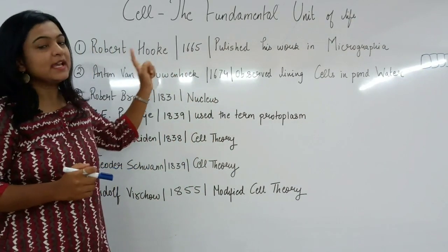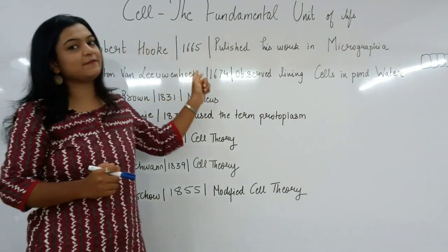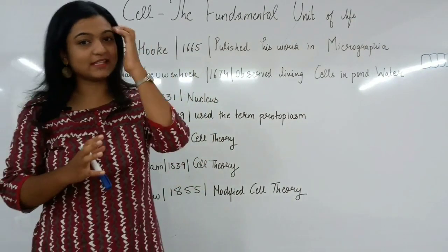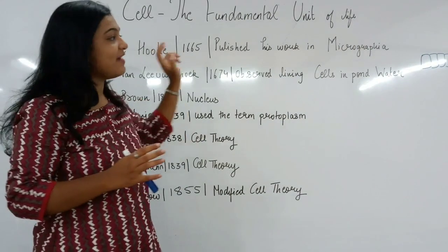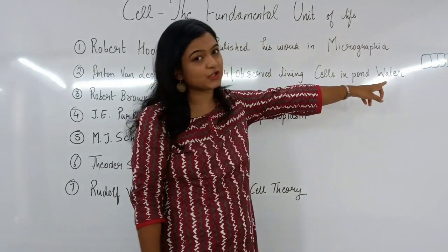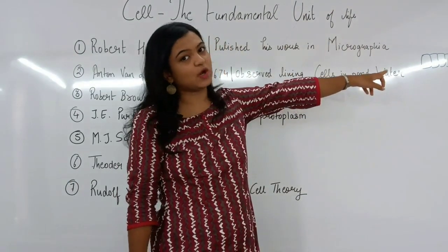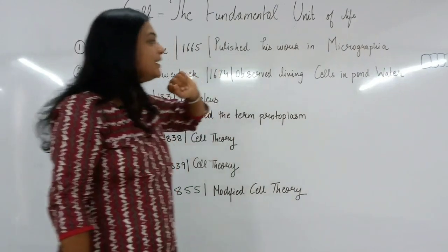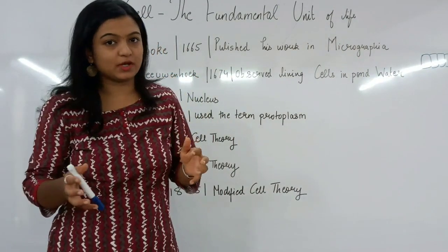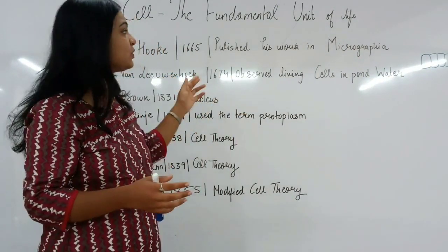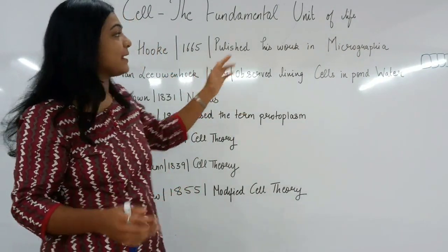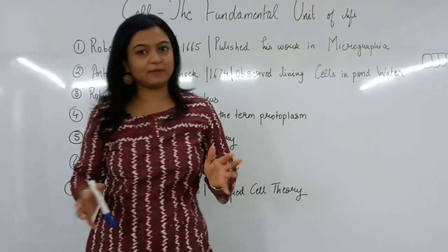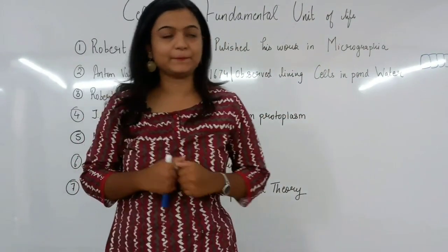Robert Hooke in 1665 saw such structures which he called cells, and he published his work in Micrographia, one of the journals that were quite famous around that time.